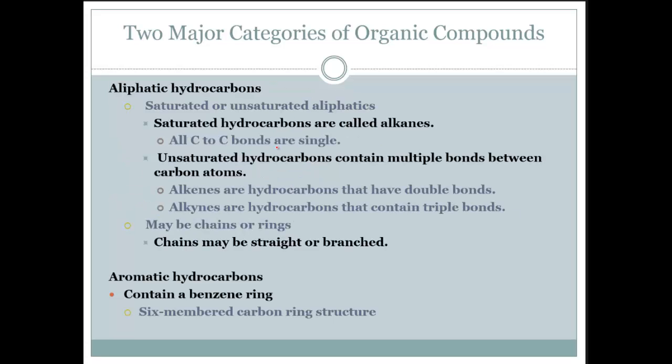Aliphatic hydrocarbons are saturated or unsaturated. Saturated hydrocarbons are called alkanes, and all the carbon-carbon bonds are single. Unsaturated hydrocarbons contain multiple bonds between the carbons. Alkenes are hydrocarbons with double bonds, while alkynes are hydrocarbons with triple bonds. They may be chains or rings. Chains may be straight or branched, meaning you have a bunch of carbons in a line and then other carbons coming off of it.